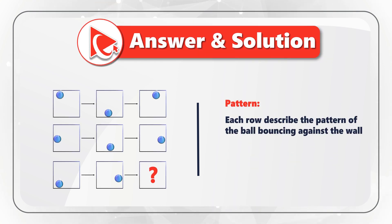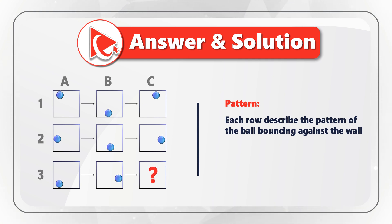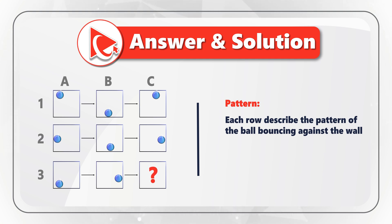We will have columns A, B, and C, and rows 1, 2, and 3. This would allow us to reference objects better. As you might have guessed, each row describes the pattern of a ball bouncing against the wall.